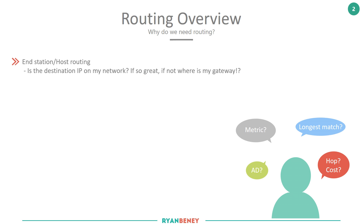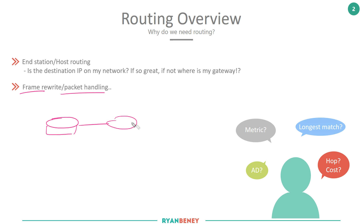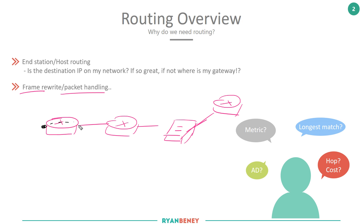Once we understand why we need to go to our default gateway to reach certain destinations, we need to understand what happens when our default gateway passes it further upstream onto different routers — and this is the frame rewrite and packet handling on a per-hop basis. If I've got a couple of routers connected, maybe connecting to a switch and then off to another router, do I understand that as a frame comes ingress on a router and is switched to the egress interface — what's happening at the frame? The decapsulation and encapsulation process on a per-hop basis, how that differs as it goes through a switch, and what the rules are around packet handling.